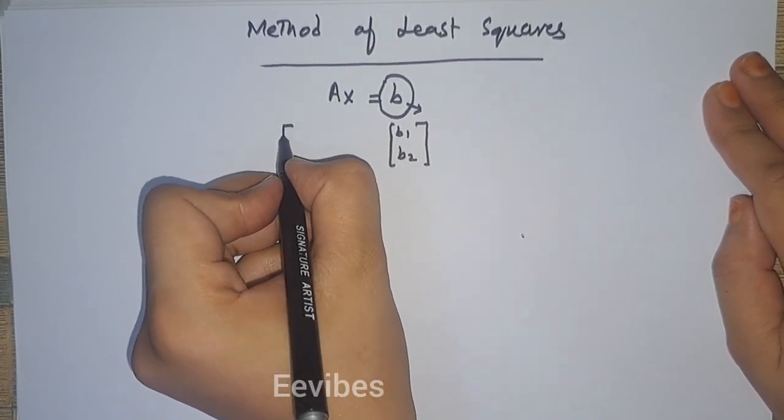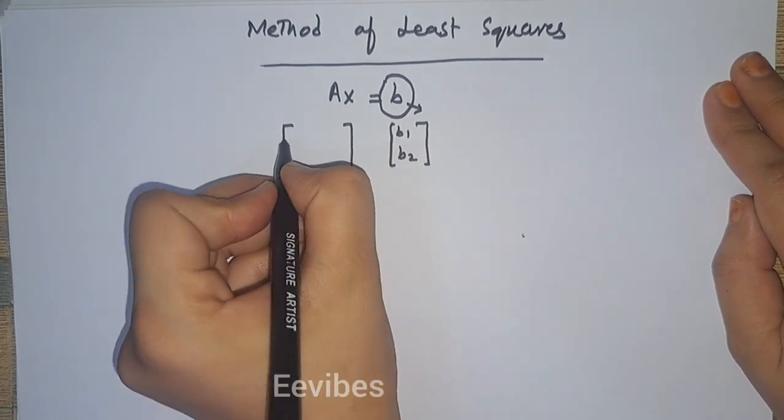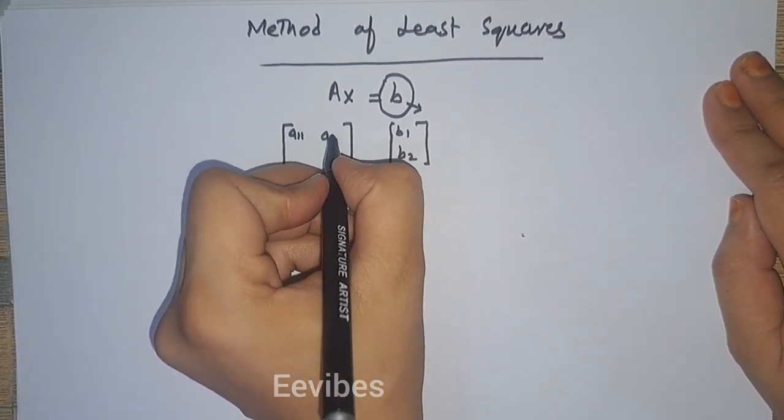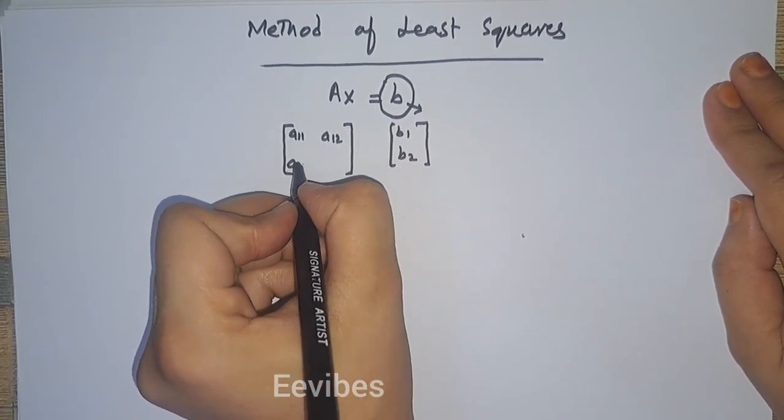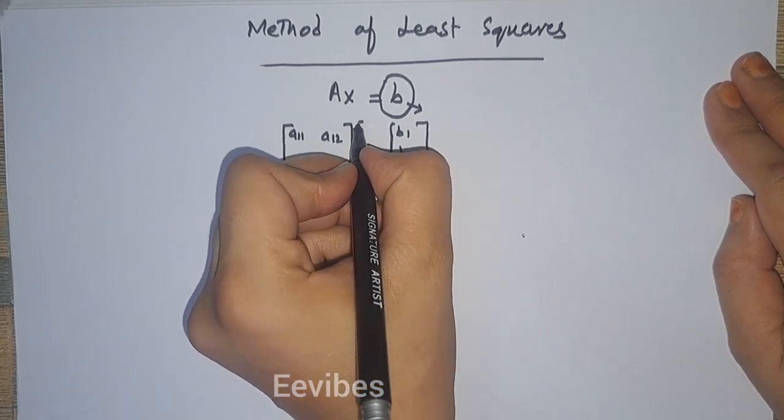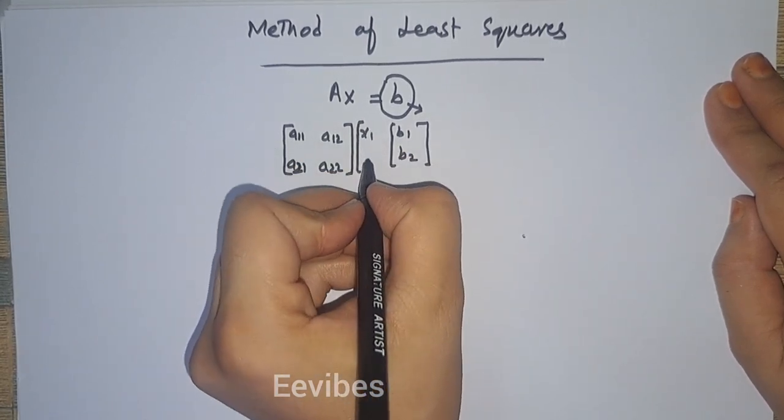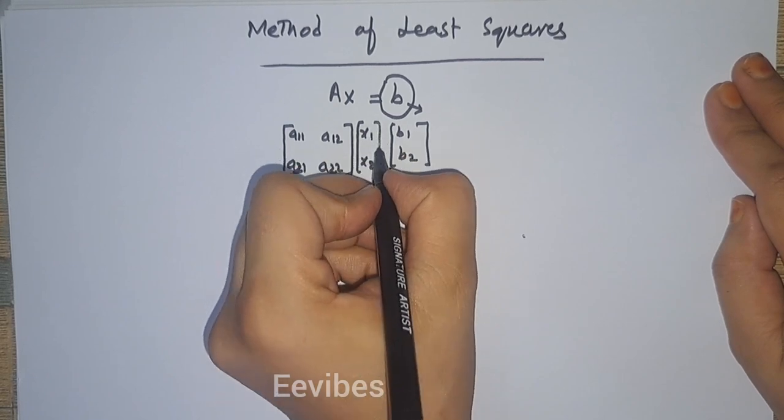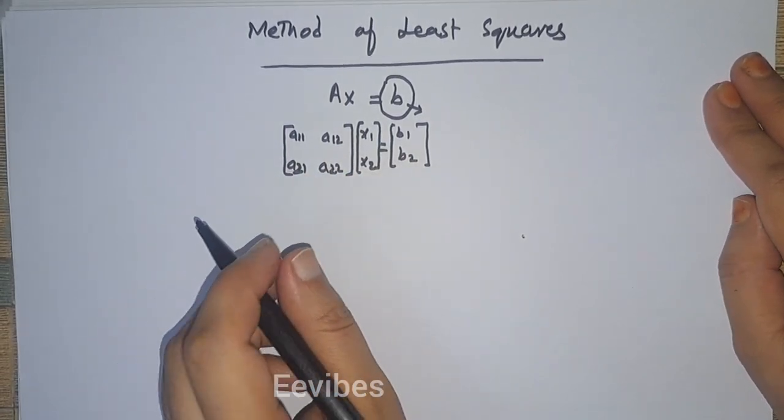A is the matrix of the coefficients like A11, A12, A21 and A22, while X is a vector having the components X1 and X2.